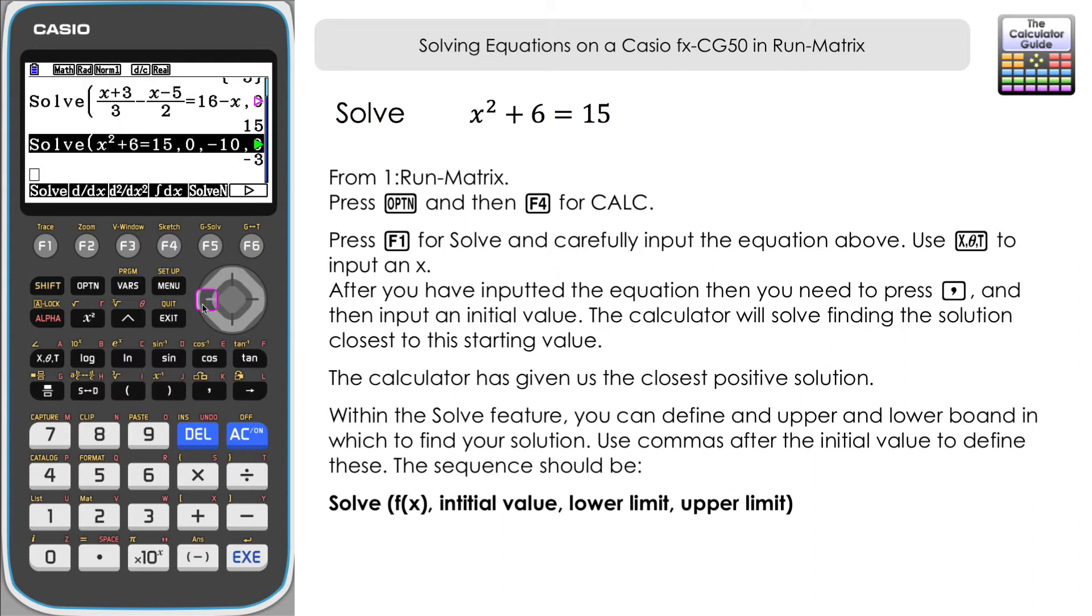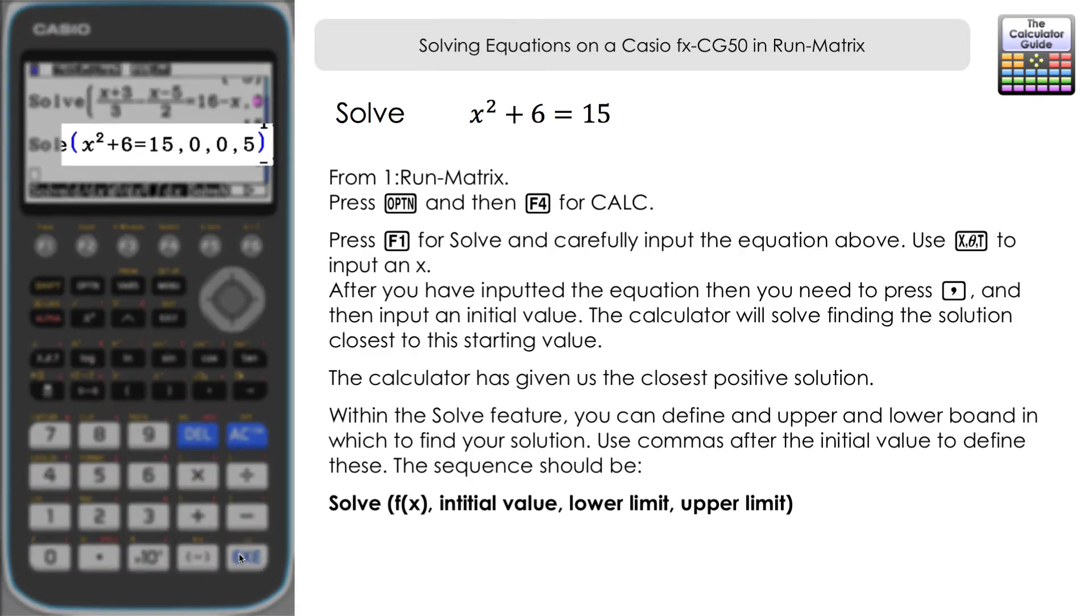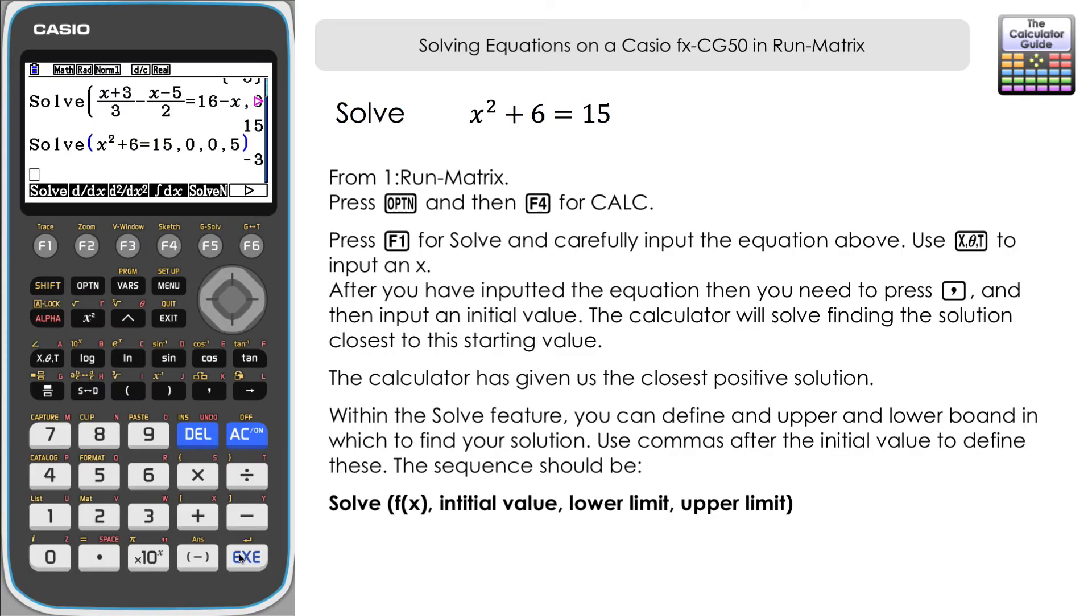And we can also if we wanted to find the positive solution using this method, let's define a lower limit of zero and an upper limit of say 5. We've got our function of x which is what is written in the brackets first, comma then our initial starting value, comma a lower limit, comma and then our upper limit and then we've closed the brackets. Press execute and we've got 3 as our solution. So that's the only solution that falls between 0 and 5.